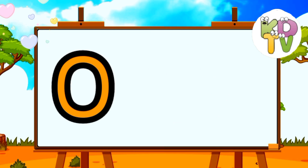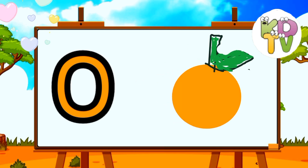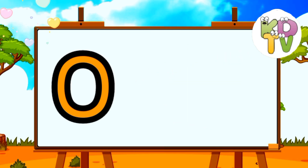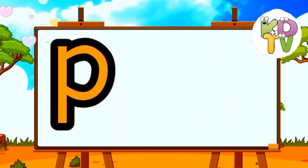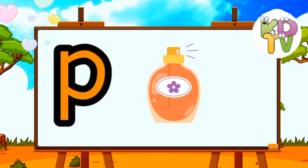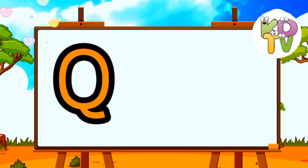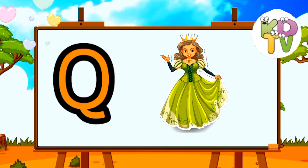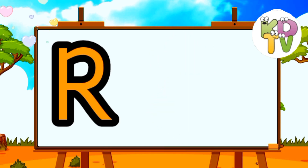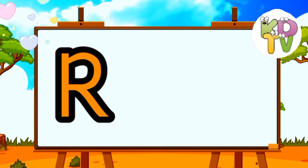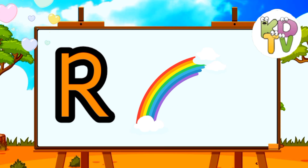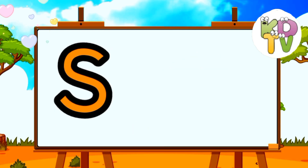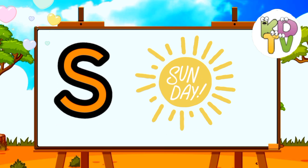O is for Orange. P is for Perfume. Q is for Queen. R is for Rainbow. S is for Sun.